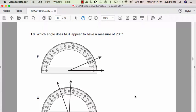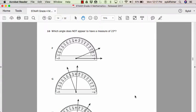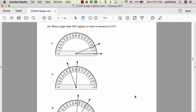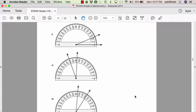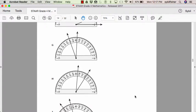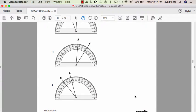Number ten. Which angle does not appear to have a measure of twenty-three degrees? F, G, H, or J.